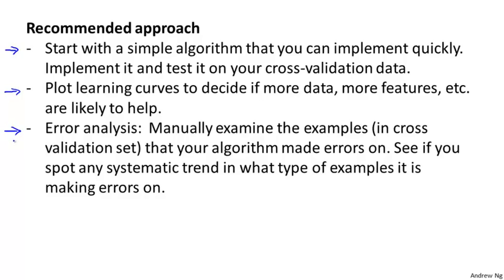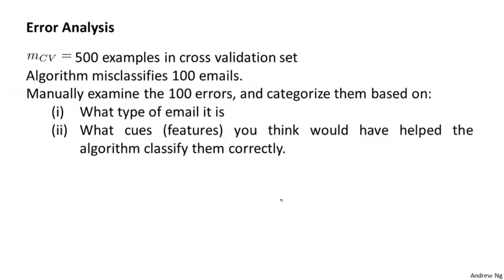Here's a specific example. Let's say you've built a spam classifier and you have 500 examples in your cross-validation set. Let's say in this example the algorithm has a very high error rate and it misclassifies 100 of these cross-validation examples. What I do is manually examine these 100 errors and manually categorize them based on things like what type of email it is and what cues or features you think might have helped the algorithm classify them correctly.